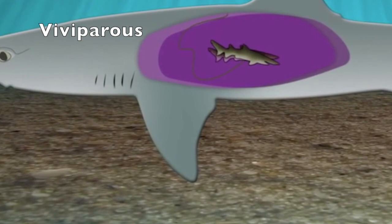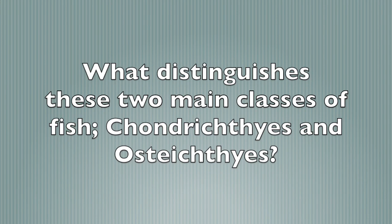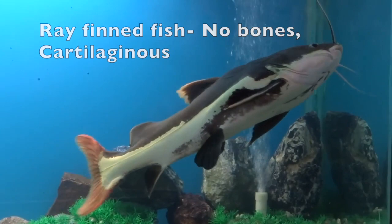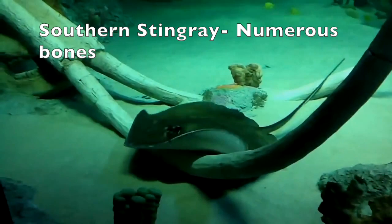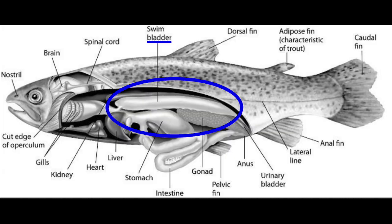The first main difference already established is that the fishes in the Chondrichthyes class are basically made up of cartilage, unlike the fishes in the Osteichthyes class, which are bony fish. Another difference includes their swim bladder. The Osteichthyes are actually the only class that have a swim bladder.